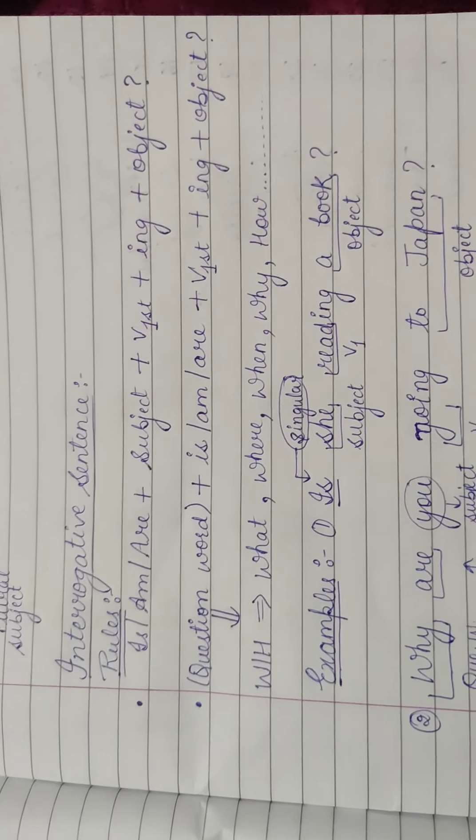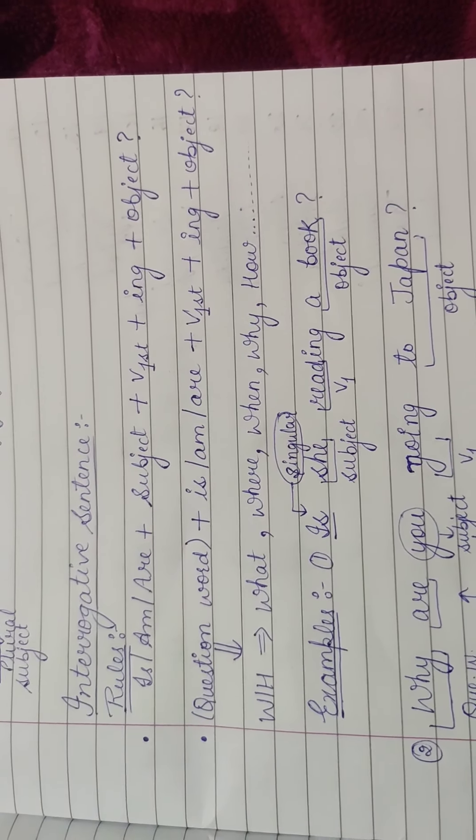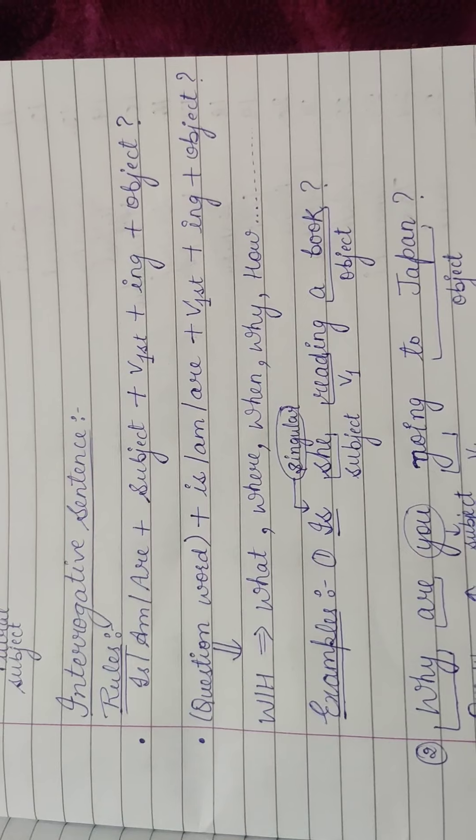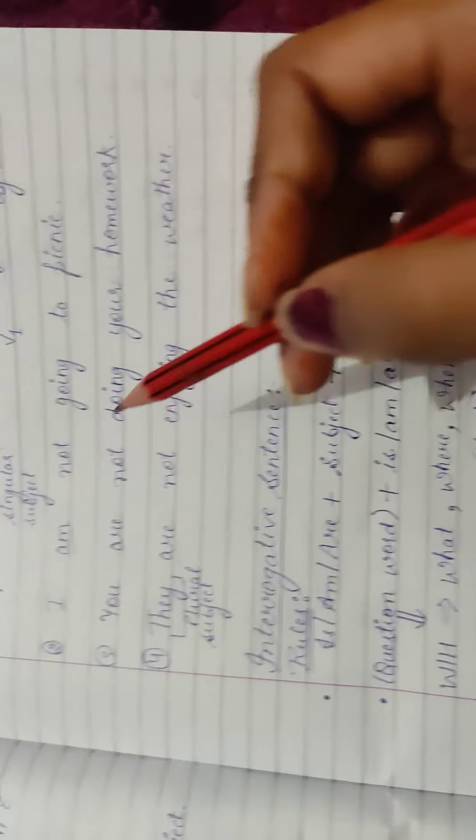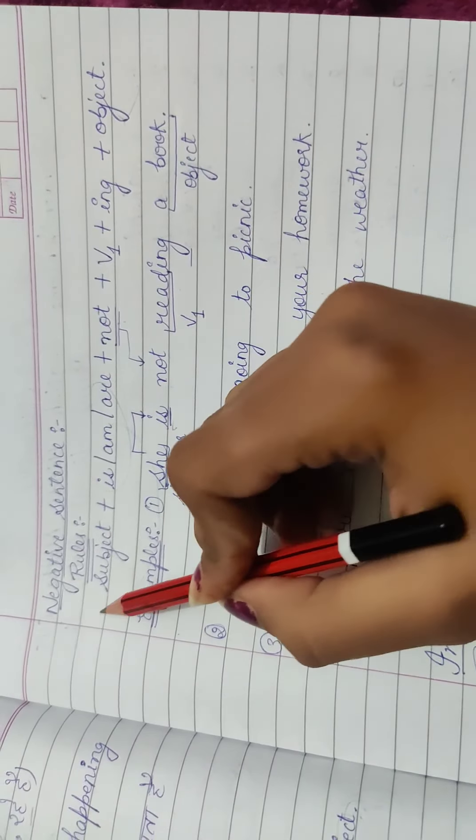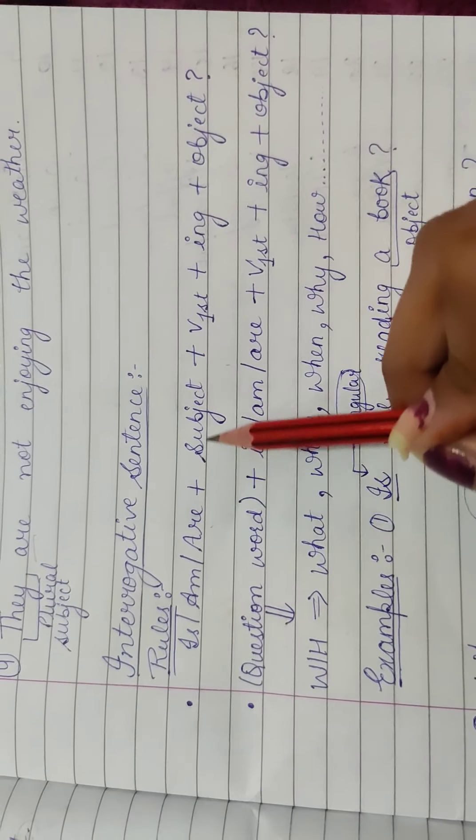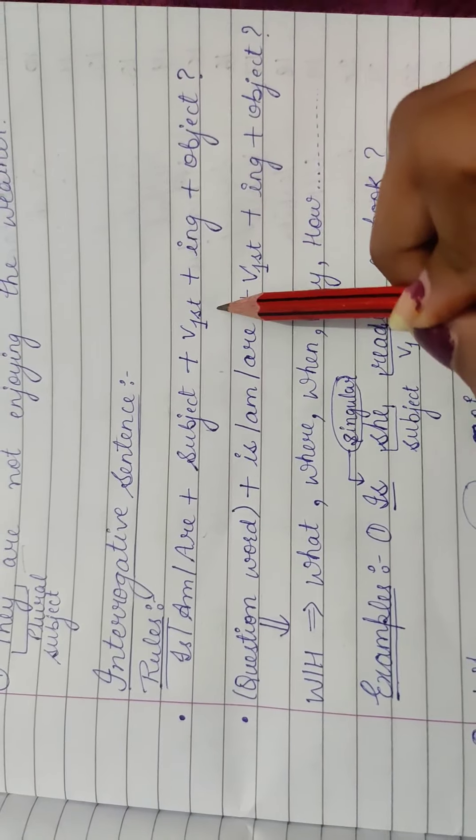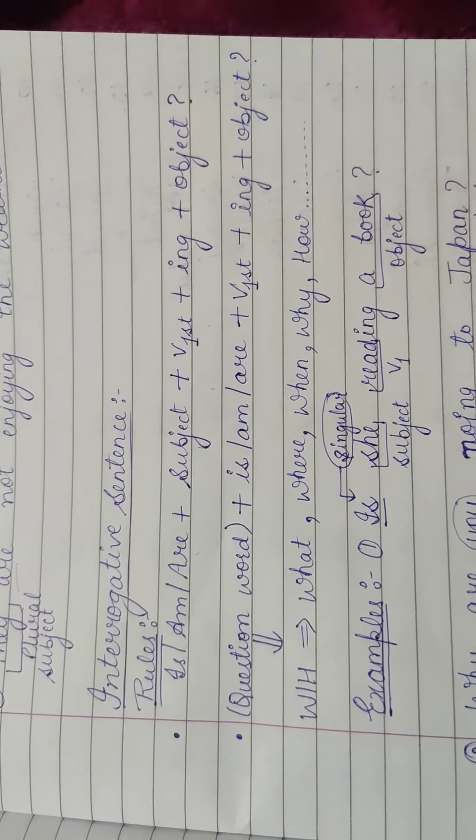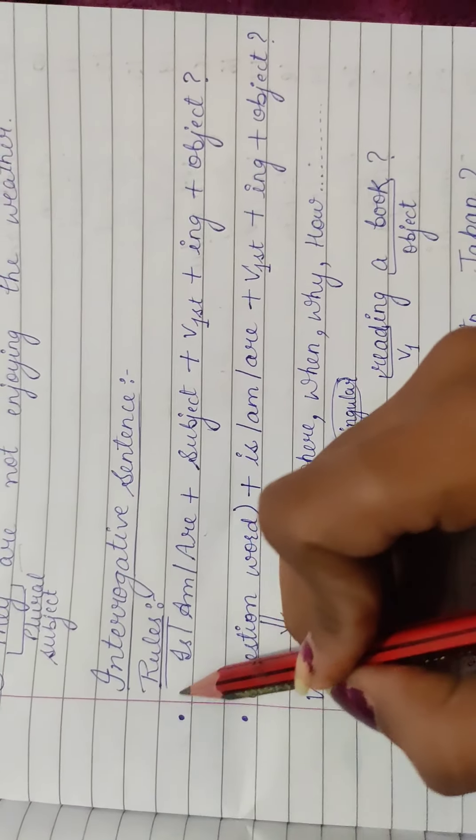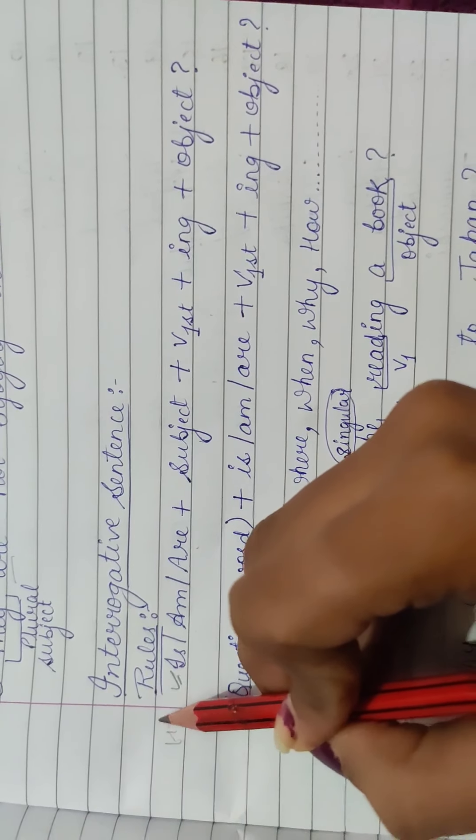Then aapka aata hai interrogative sentence. Interrogative mein kya hota hai? Question push thua aap. Is meh itna fark aayega, ki joh helping verb, aapki pehle lag raha thi, woh helping verb, aapki sabse shuru mein, lag jati aaghe. Is, am, are sabse pahle aajayega, phir aapka subject aayega, karta aayega, phir wohi verb ki first form, ing, object aur question mark.